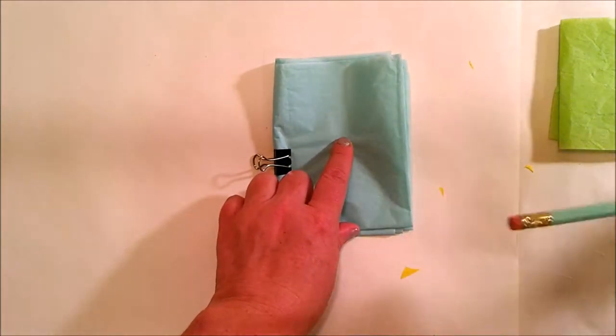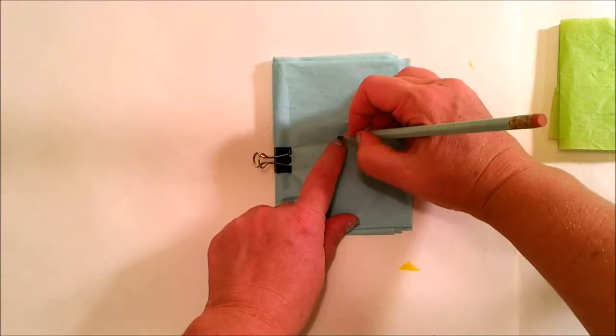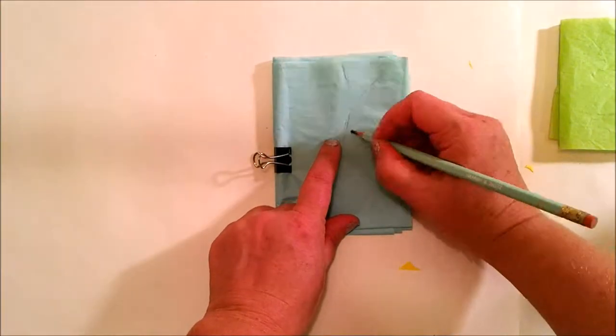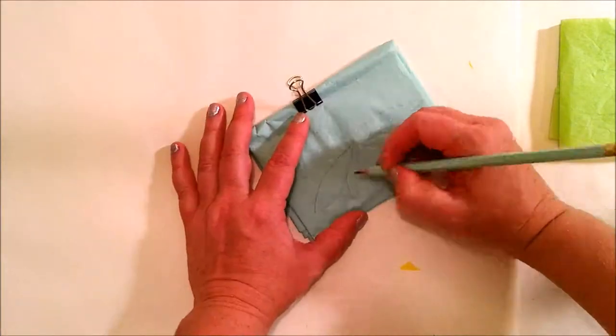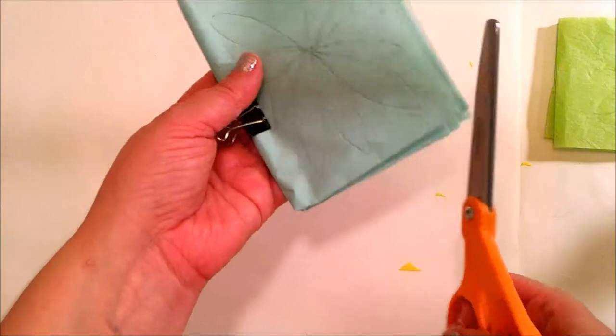Now what I'm going to do is just simply sketch out the Daisy and just cut it out.